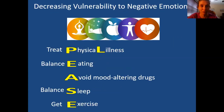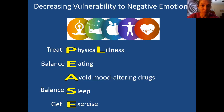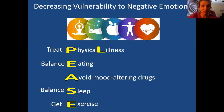So this is the PLEASE part of ABC Please — also about decreasing vulnerability to negative emotions. This one is a little different because it's all about the mind-body connection. It's dealing with the physical aspects of ourselves to make them a little bit stronger and healthier so we're able to deal with emotions when they come. Things we can do: treat physical illness, balance eating, avoid mood-altering drugs which often impact our emotions, balance sleep so we're not too tired and cranky, and get exercise — a universally great thing you can do for your body and your mood.